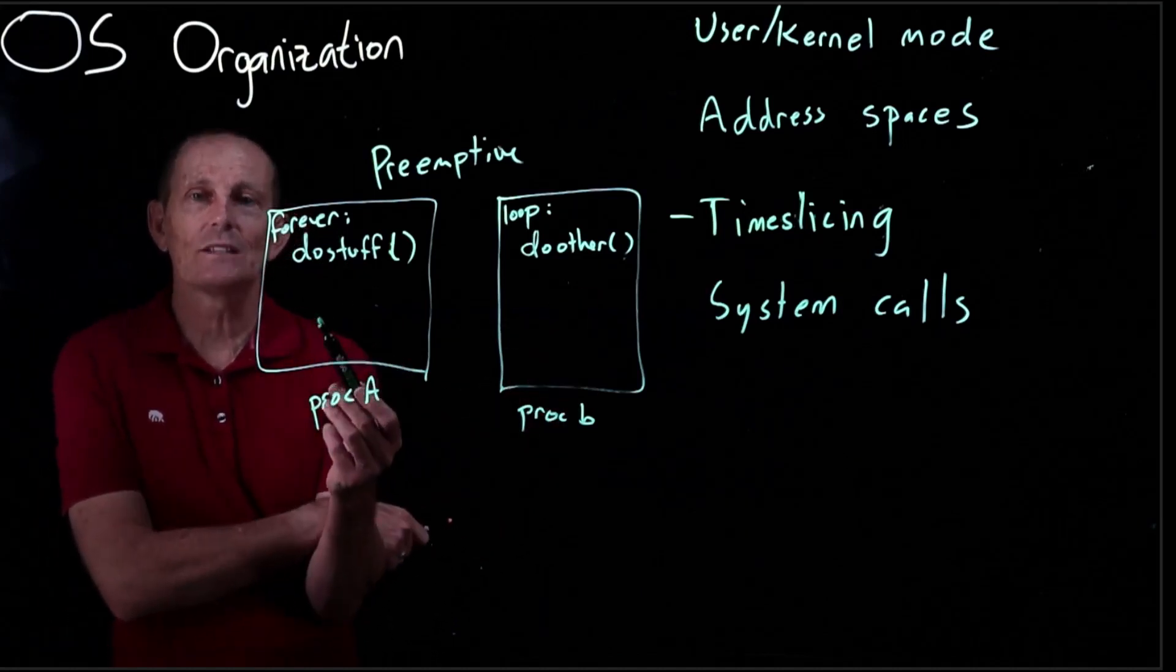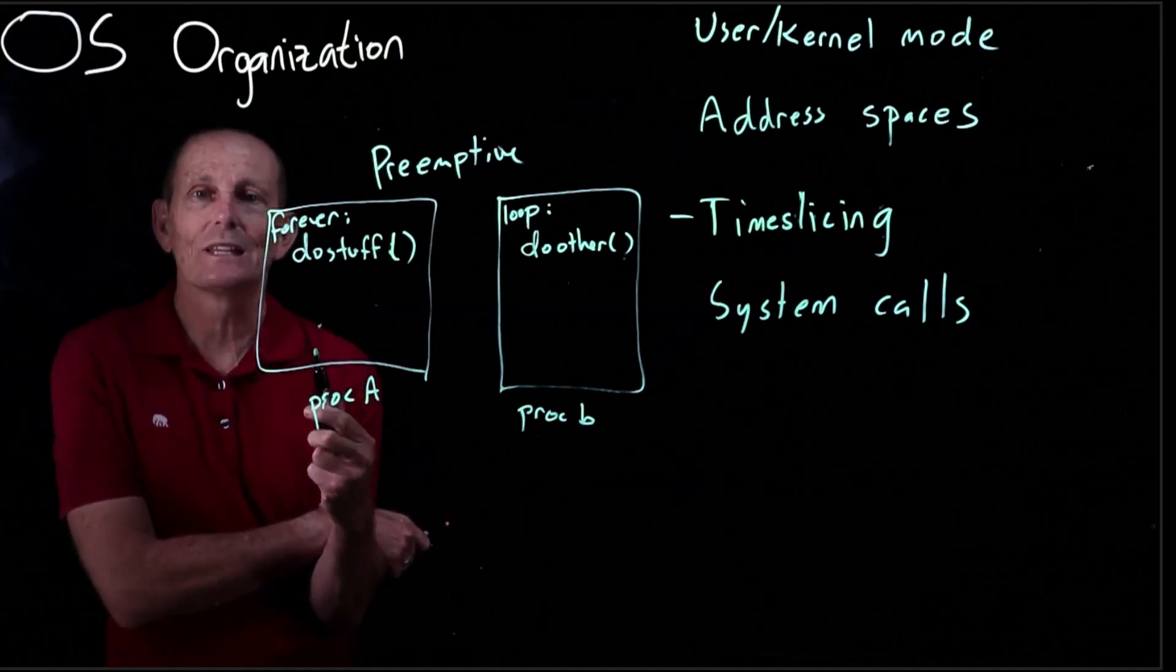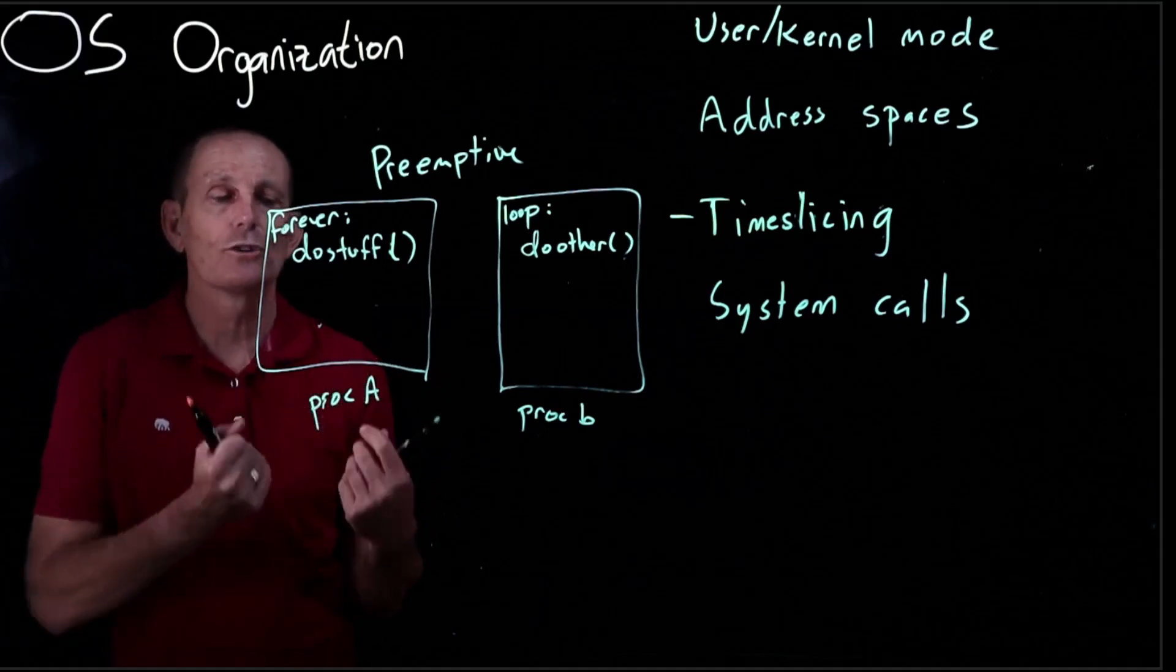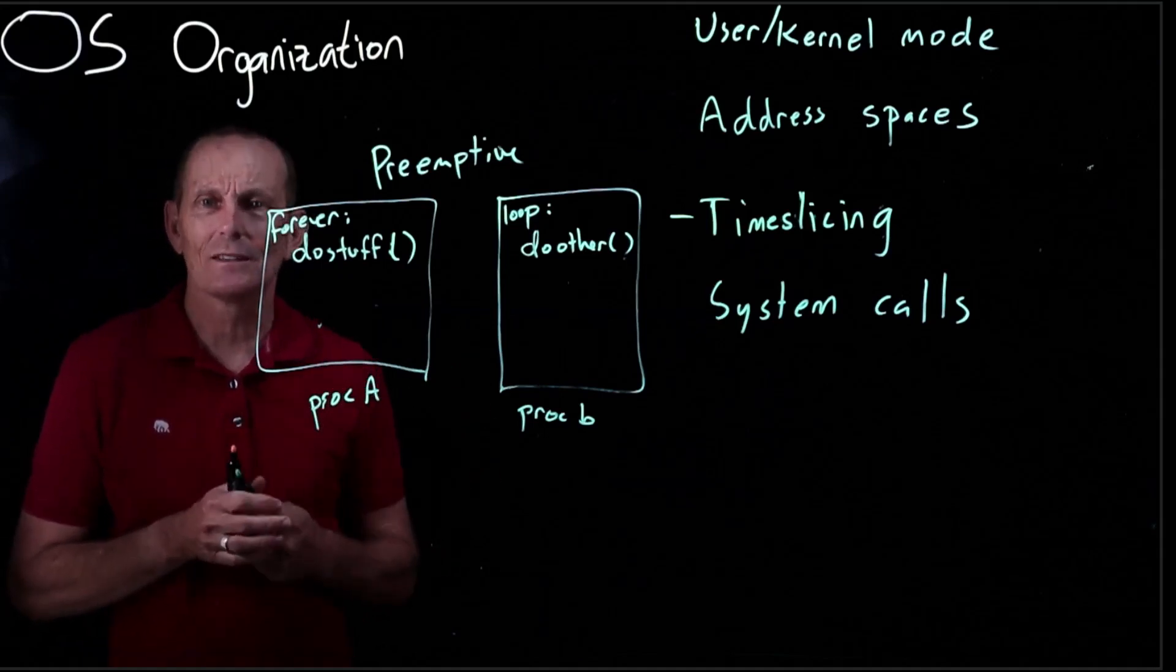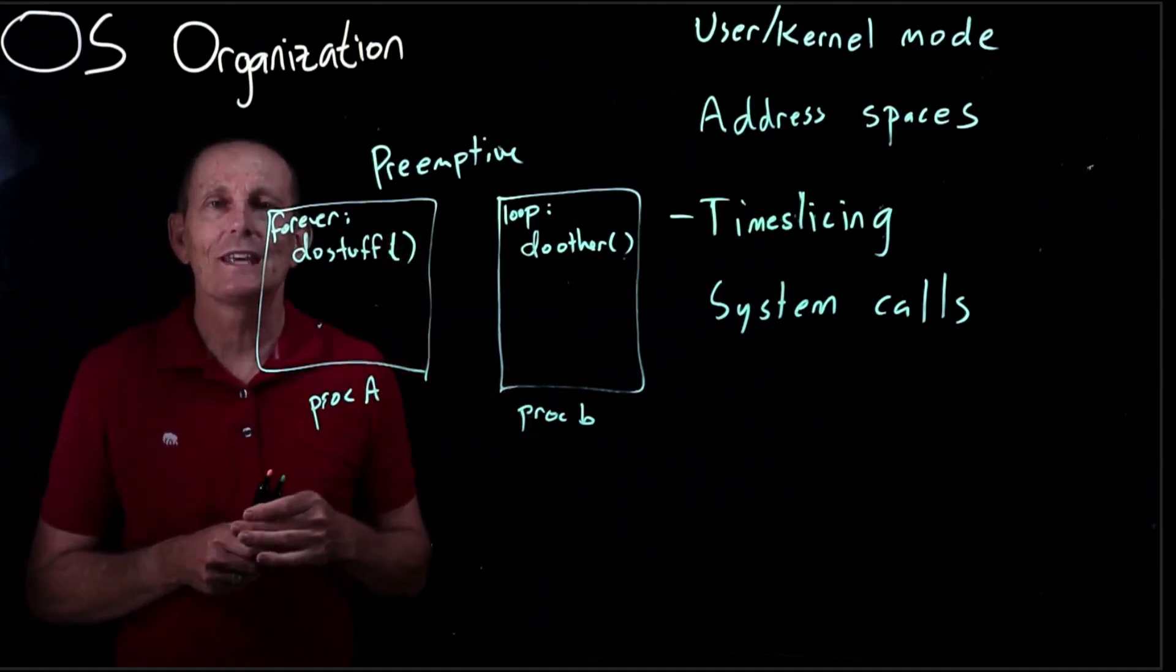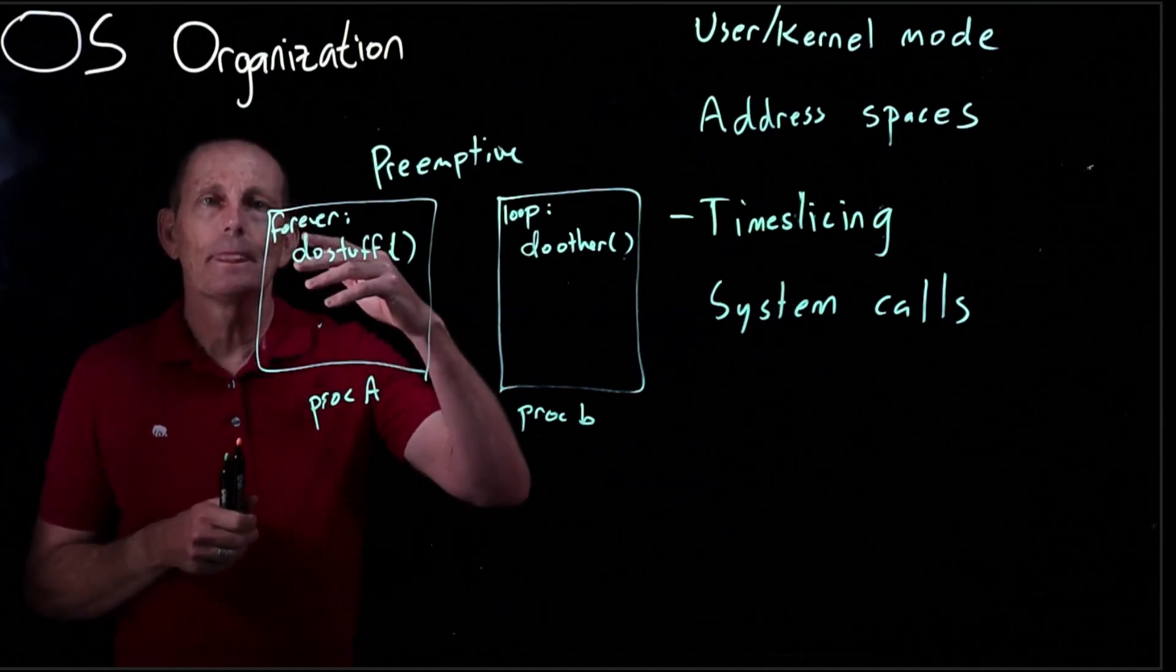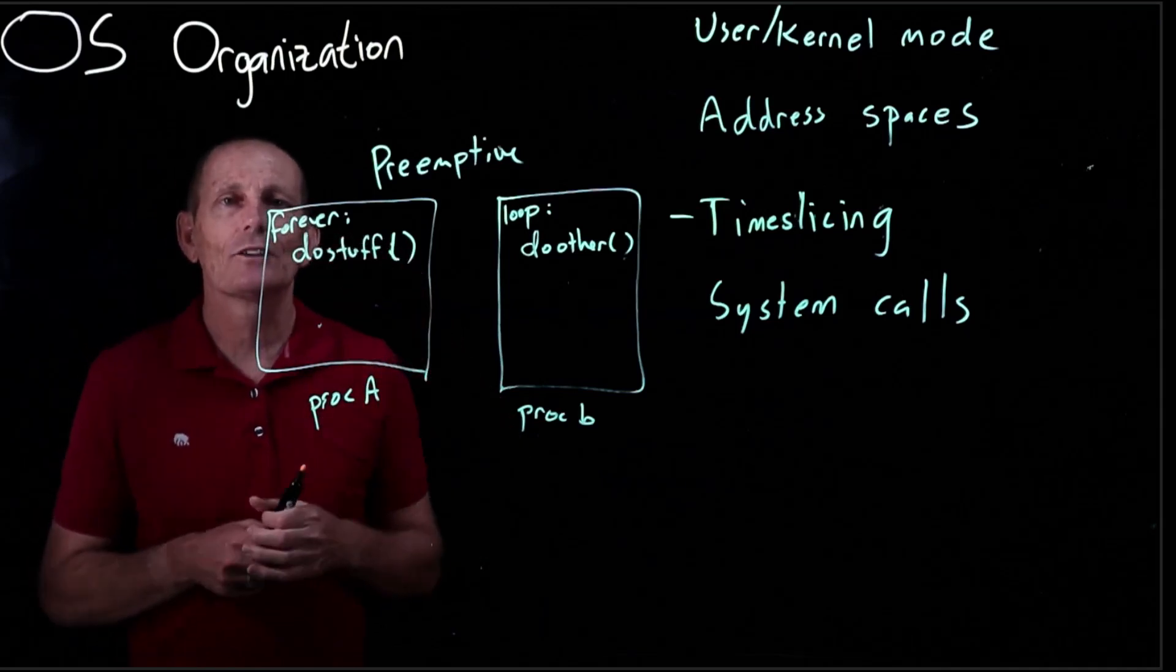But if you've got a process that's not making any system calls then the kernel doesn't really have an opportunity to take control to wrest control back from process A and execute process B because the kernel is not magic. If the kernel lets process A start running and process A then just does user instructions calculating pi to a million decimal places then there's no easy way for the kernel to get back control.